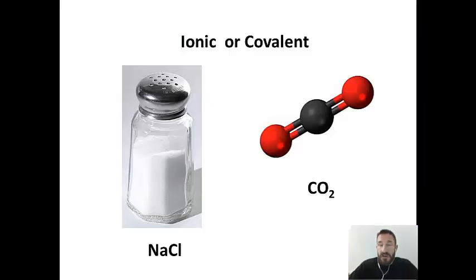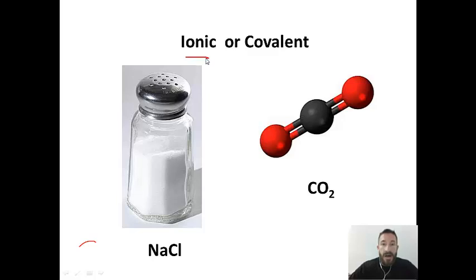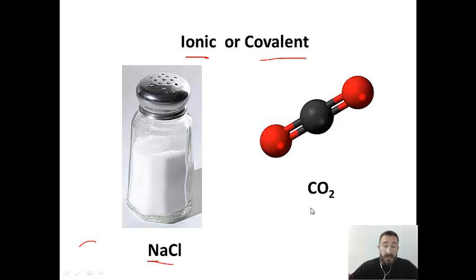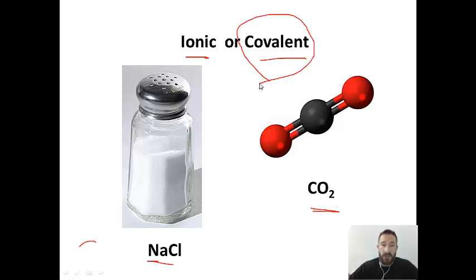To classify things by the type of intermolecular force, you first have to determine whether those things are ionic or covalent. Remember, the key to knowing if something is ionic is it will be a metal and a nonmetal. For example, sodium chloride is ionic — it's a metal and a nonmetal — and carbon dioxide is covalent. So only covalent things will have intermolecular forces.